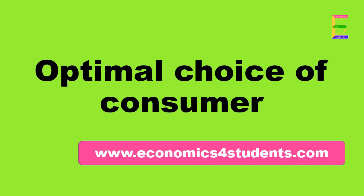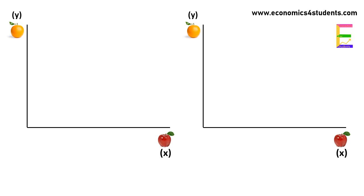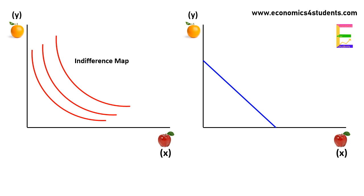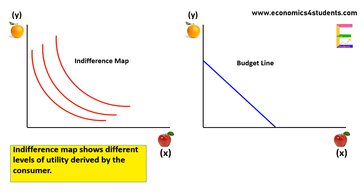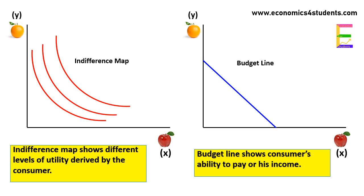Welcome to Economics for Students. In this video we are going to explain the optimal choice of a consumer. We have already learned about indifference maps and budget lines in our previous videos. The indifference map shows different levels of utility derived by the consumer, and the budget line shows the consumer's ability to pay, or his income.